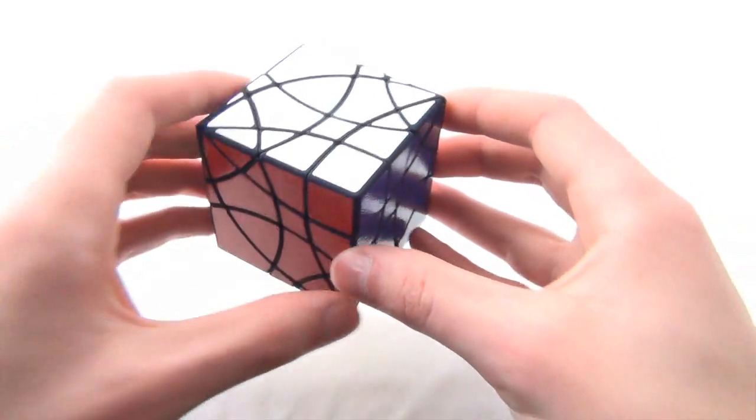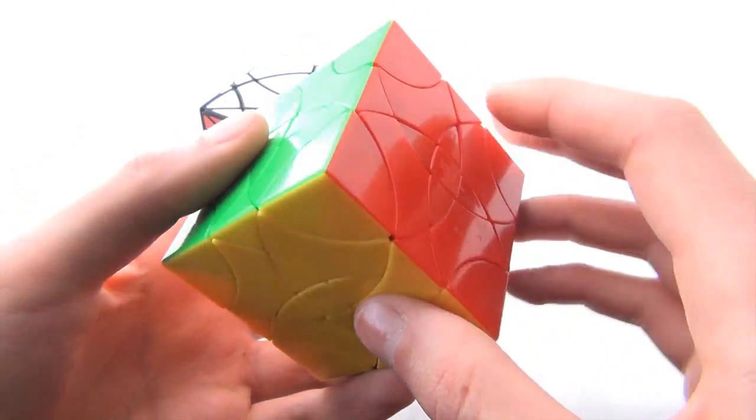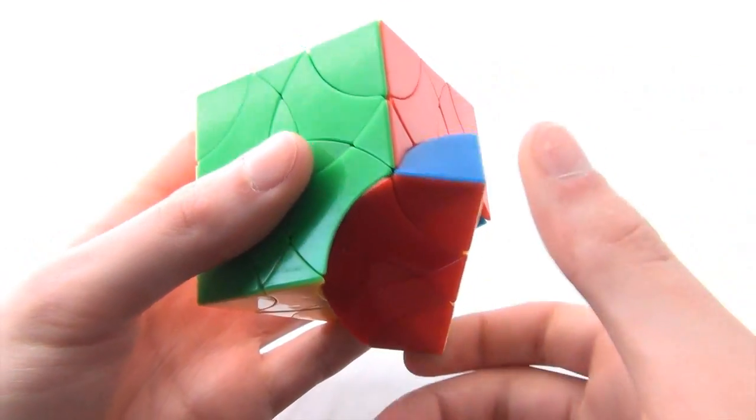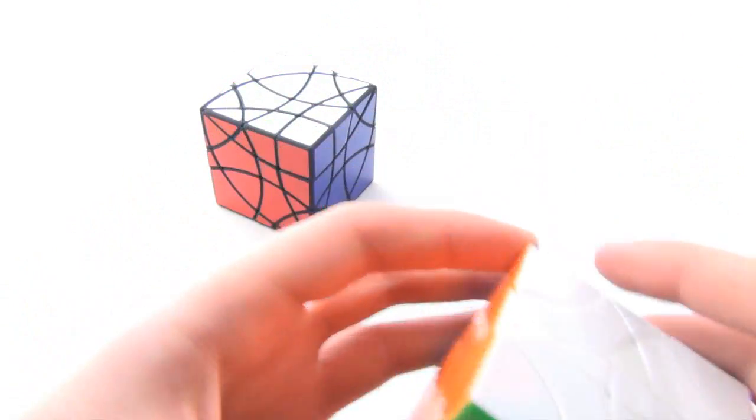As the name of the puzzle suggests, it is based on a CurvyCopter 3, which is an edge-turning cube and also equivalent to a face-turning rhombic dodecahedron.